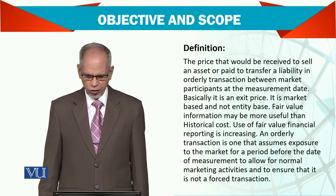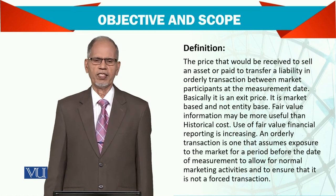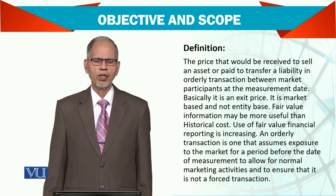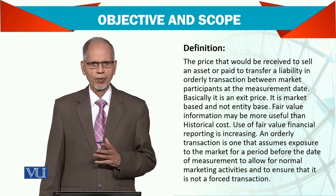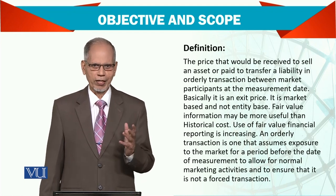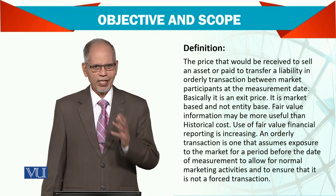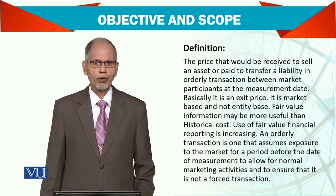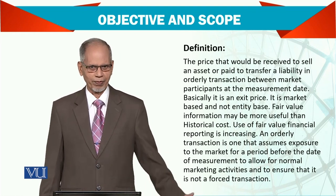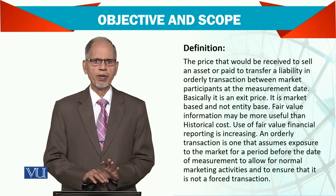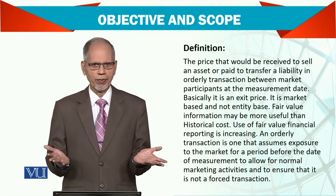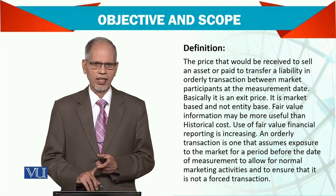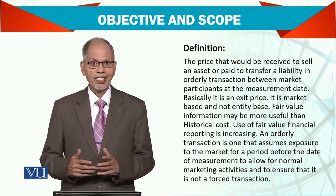Fair value information may be more useful than historic cost information. Why is this standard there? Because historically we see the asset's value. Let me give you a simple example: you got a car, you bought it for 20 lakh rupees, you run it for 5 years, and still you can get 220,000 rupees. How is it possible? It is possible because the prices of cars are going up and up. Historically, the car may be nil value in the balance sheet because 5 years at 20% depreciation is nil. But it is still working. So that is why we need to report that car at fair value — how much we get in the market for it.